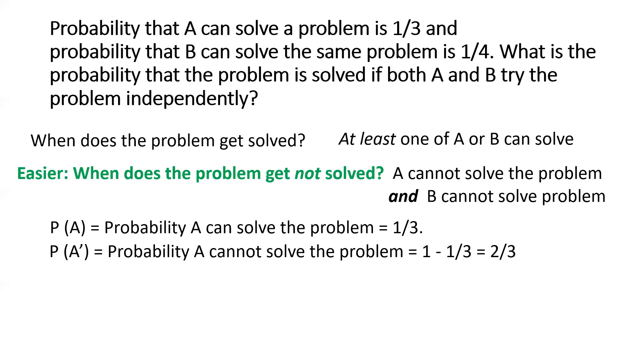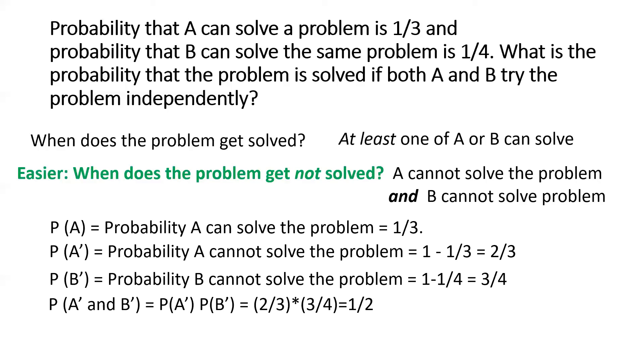So, if P(A) is the probability that A can solve the problem and that's given as one third, then the complement of that, P(A') or P(A dash), is the probability that A cannot solve the problem, that will be 1 minus one third, and that's two thirds. And similarly, probability that B cannot solve the problem will be 1 minus one fourth, and that's three upon four.